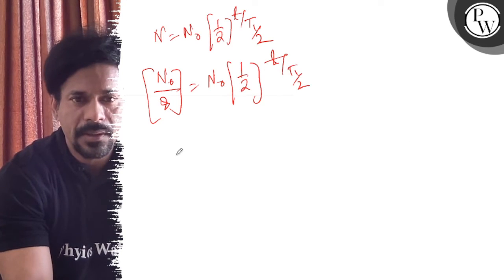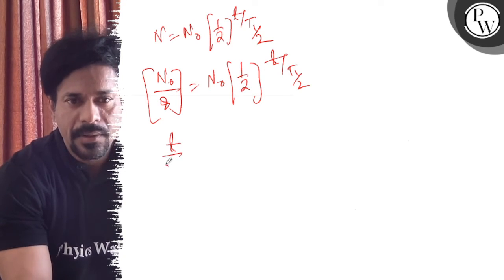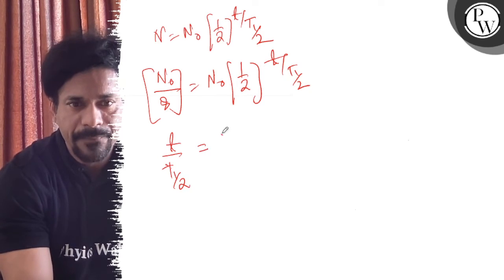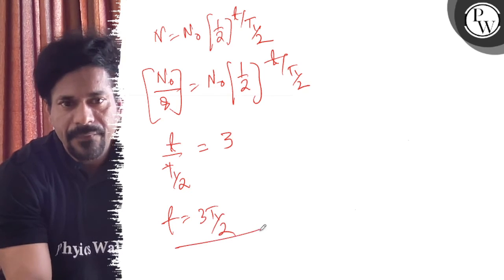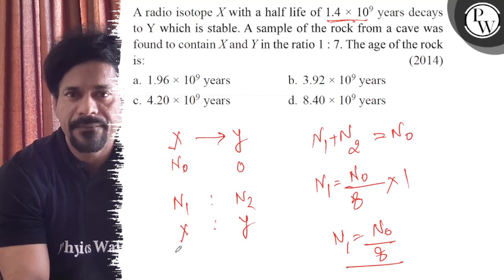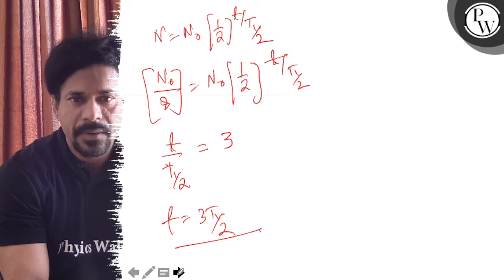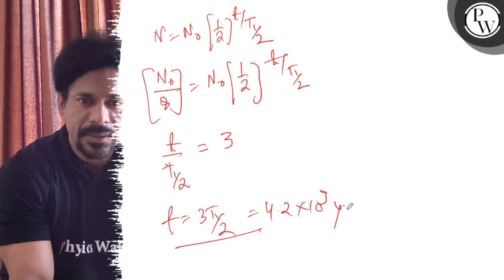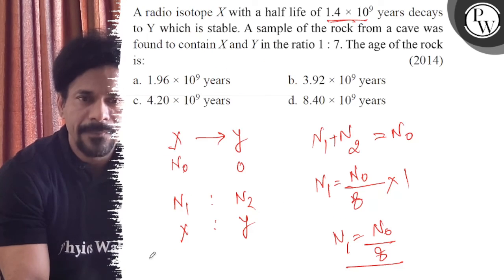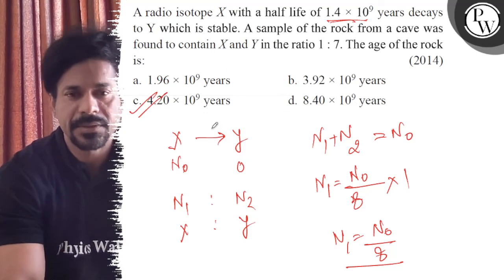This gives us t/t_half equals 3. So t equals 3 half-lives. Three half-lives equals 3 times 1.4×10^9 equals 4.2×10^9 years. So option C is correct. All the best.